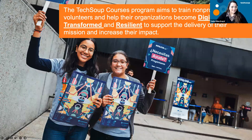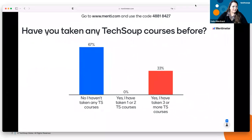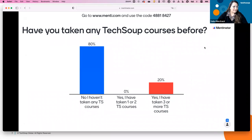Since we're on the topic of courses, let's start off with our first poll question. You can scan this QR code from your phones or simply log on to menti.com and use the code that we've shared. We'd like you to answer: Have you taken a TechSoup course? Looking at the results — I see that many of you have taken three or more courses, which is great, and it's also great to see those who haven't, as this is a great opportunity to introduce you to what we have.